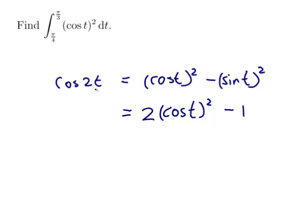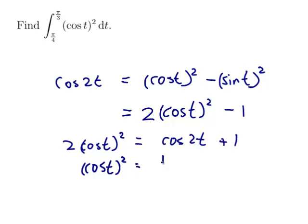Now I can rearrange that to get something more useful. I've got 2 cos²t = cos 2t + 1. So cos²t = 1/2 cos 2t + 1/2. And now I can do my integral.